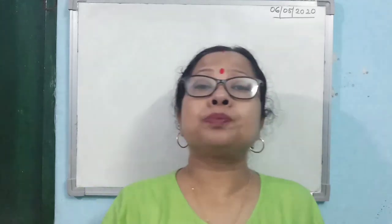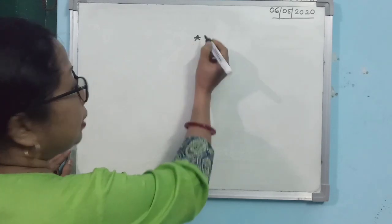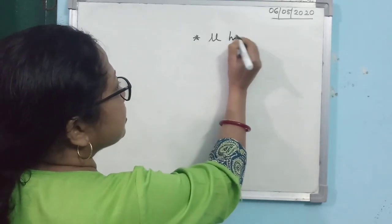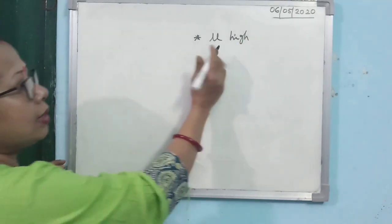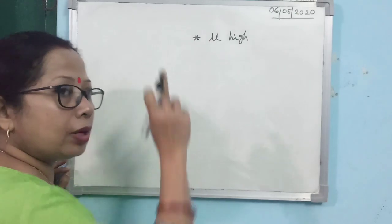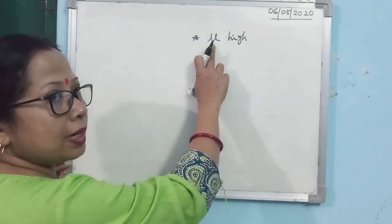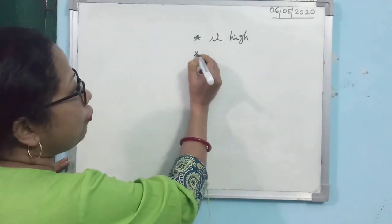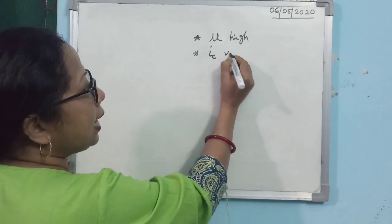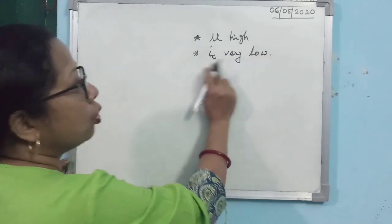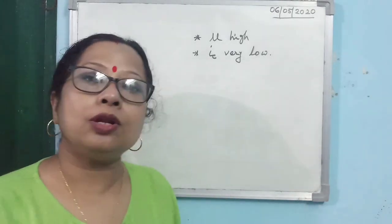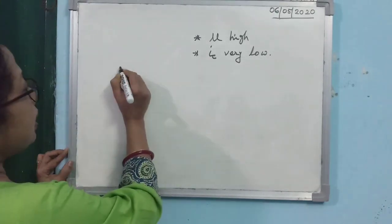The next consequence is very interesting — diamond sparkles, and that is why we love it so much. The physics behind it: for diamond, the refractive index is very high. Because the refractive index is very high, the critical angle is very low. As the critical angle is very low, the probability of total internal reflection is very high.